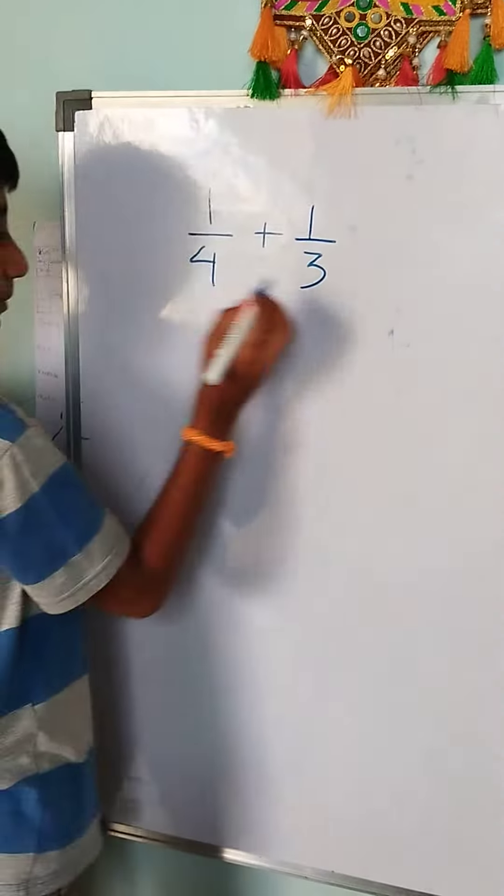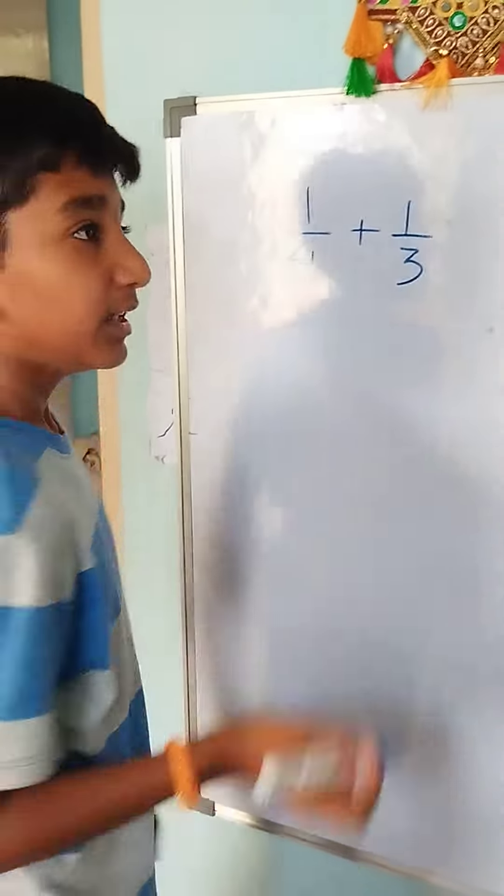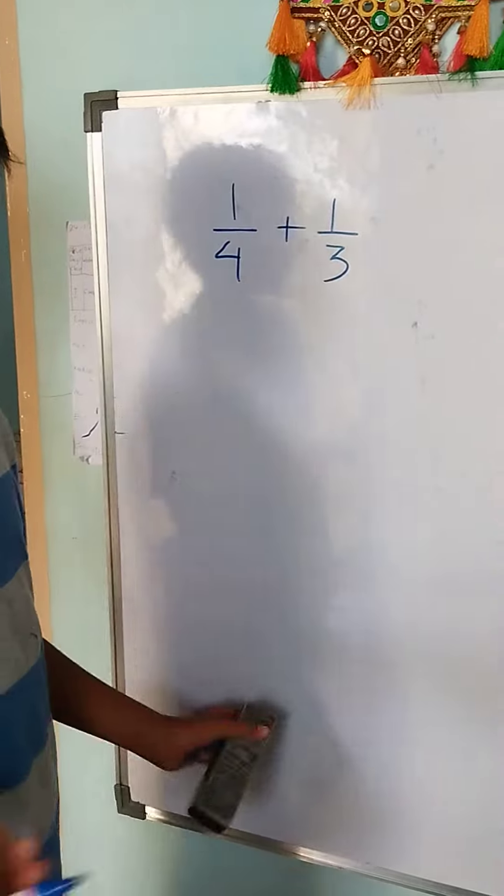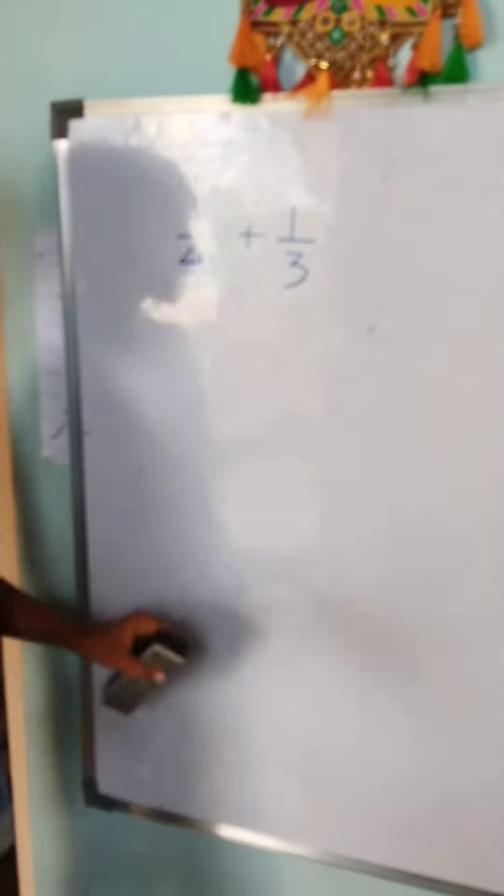First you need to check both the denominators, are they like or unlike? If it's like, then the denominators should be the same. If it's unlike, then we have to do some other calculations.